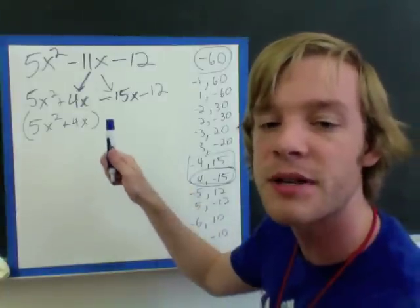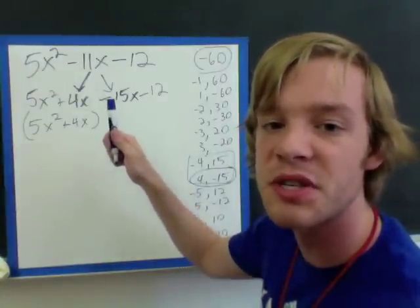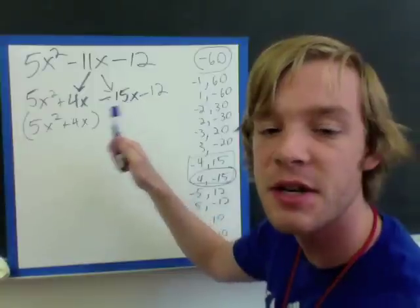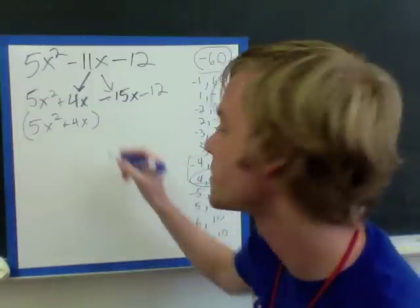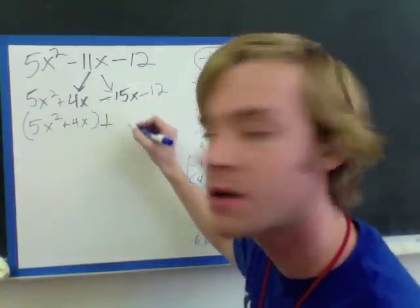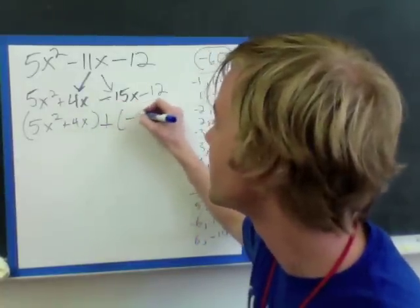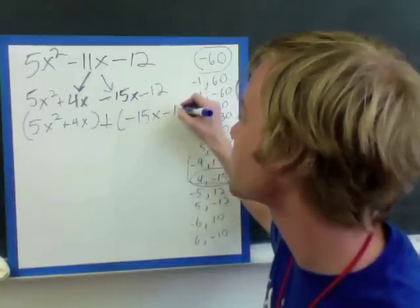Remember, I need a plus sign in between my two parentheses, so this negative from the 15x is going to come inside. So I'm going to have plus and then negative 15x minus 12.